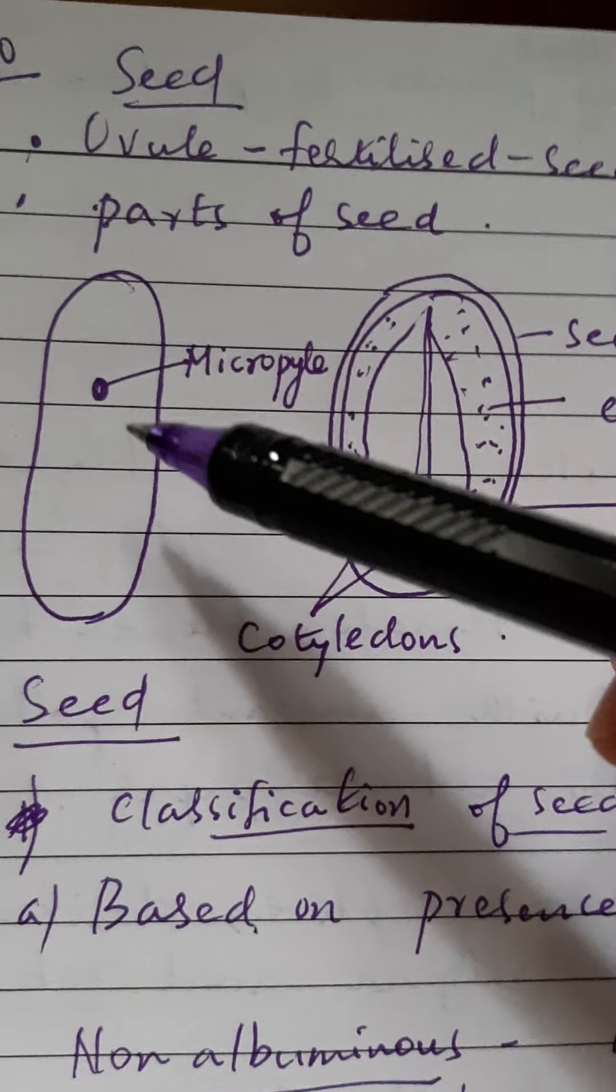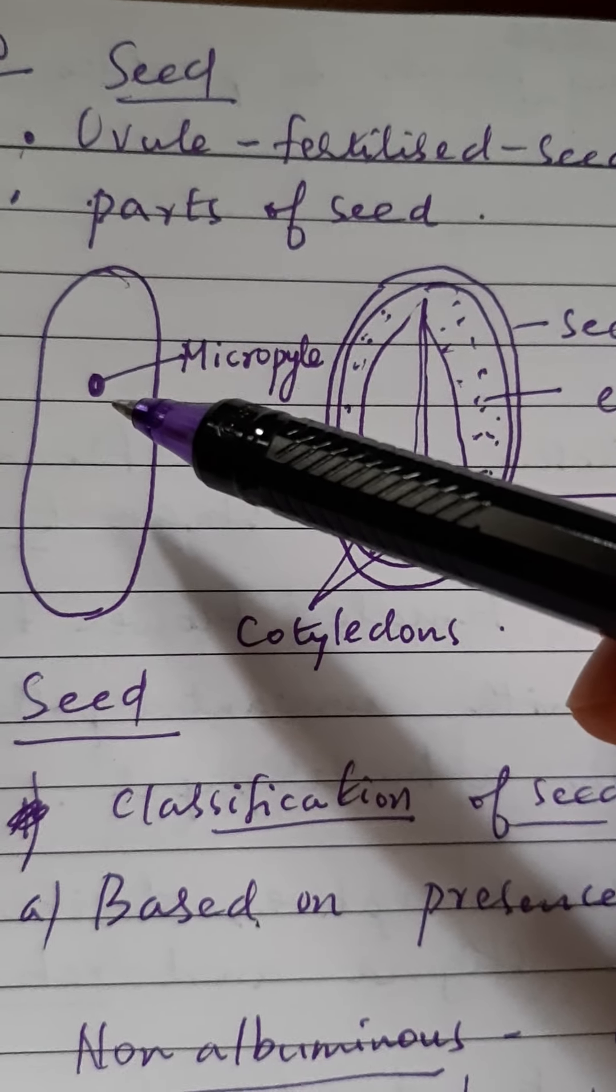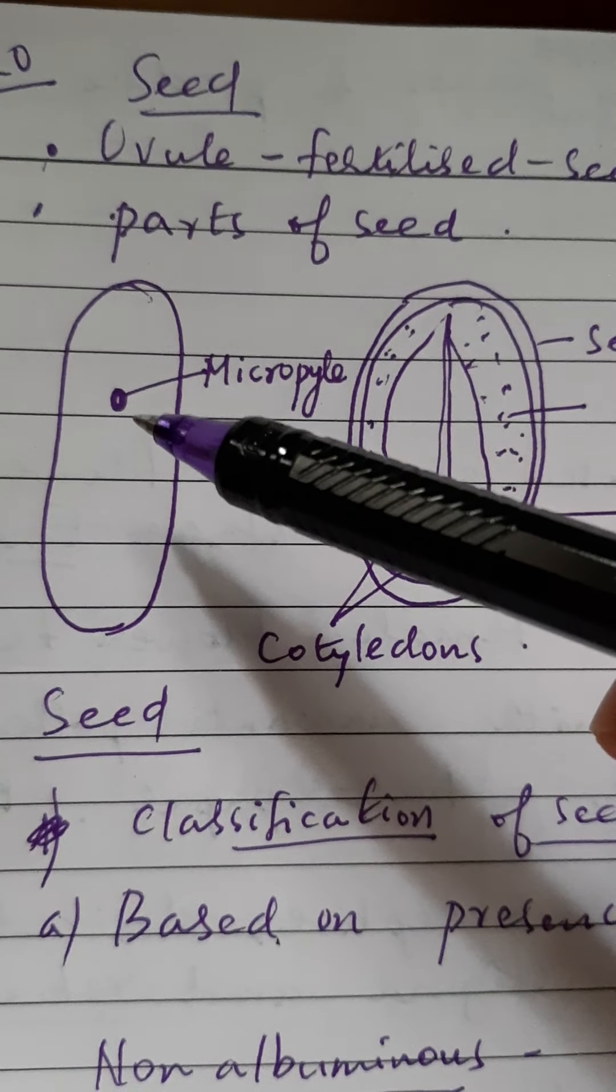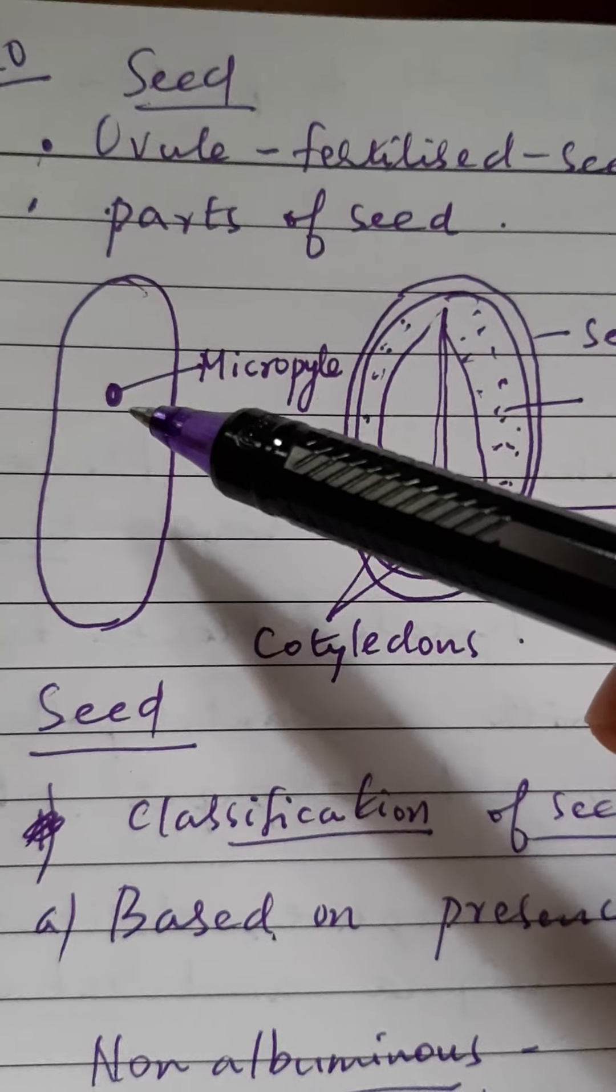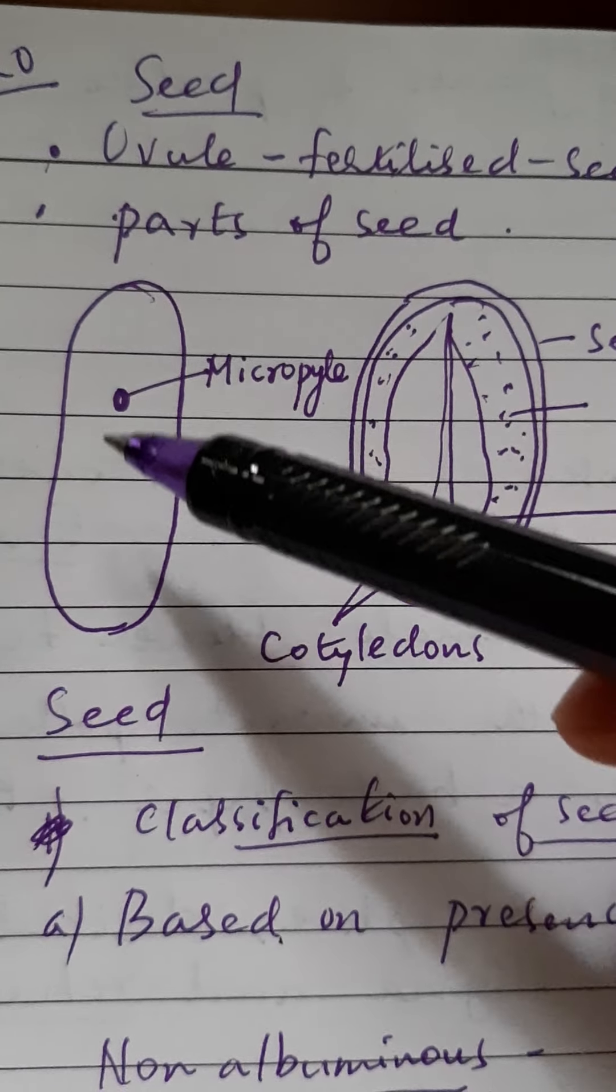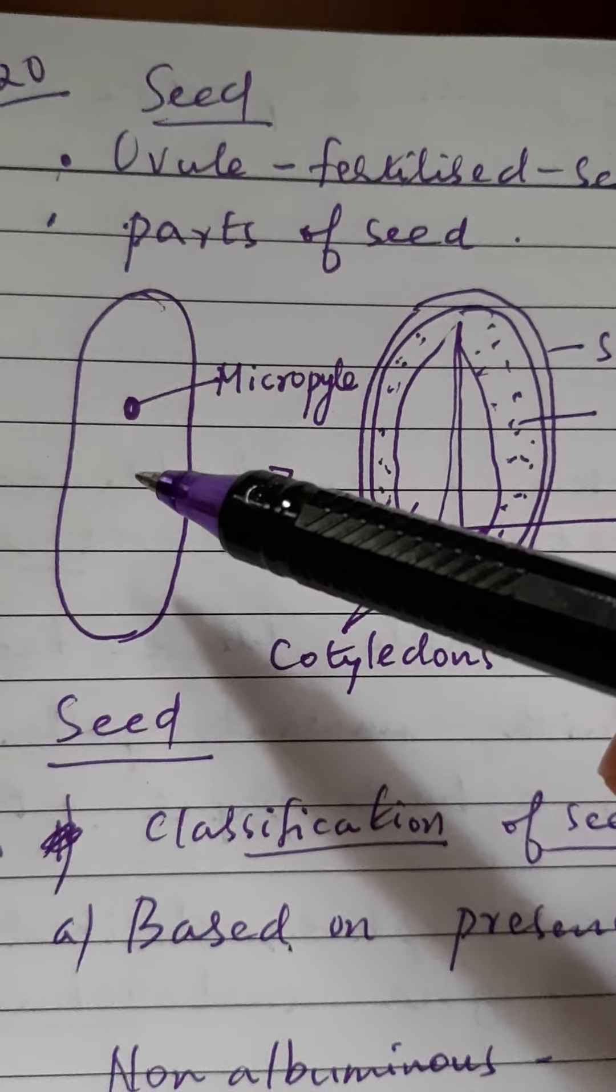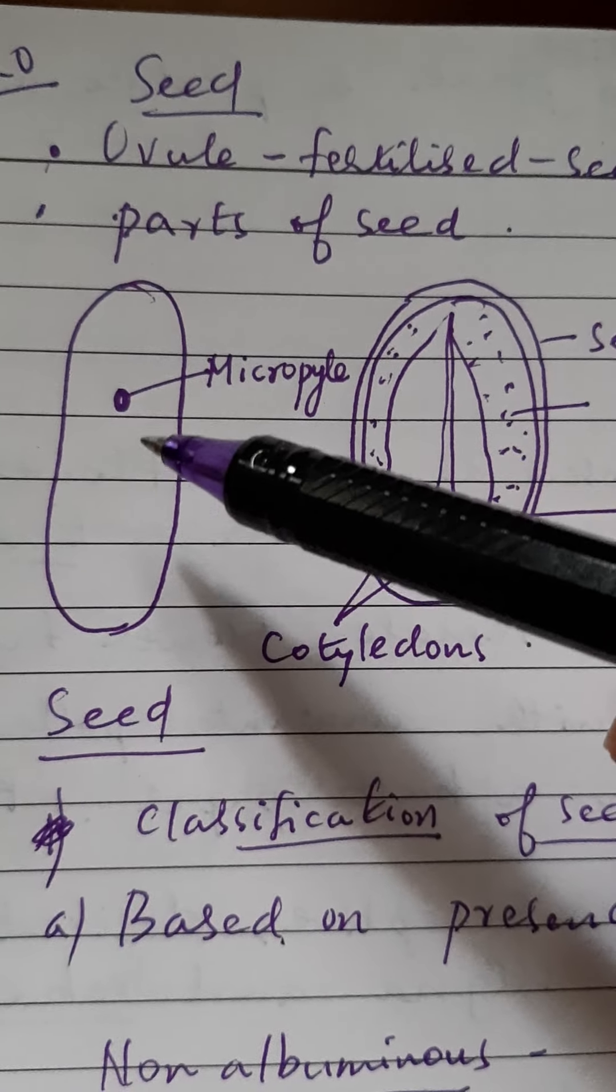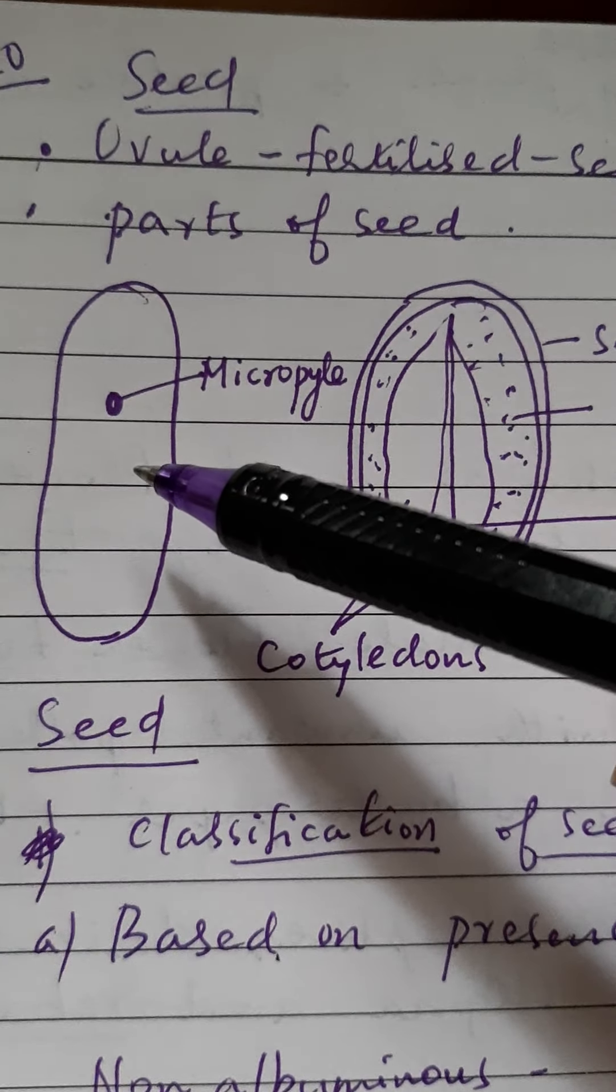Micropyle is a part of the ovule. After seed formation, the micropyle will be the opening for exchange of gases as well as absorption of water. It is through this micropyle opening that the seeds will obtain water, oxygen, and other gases, and it will help in germinating of the seeds.